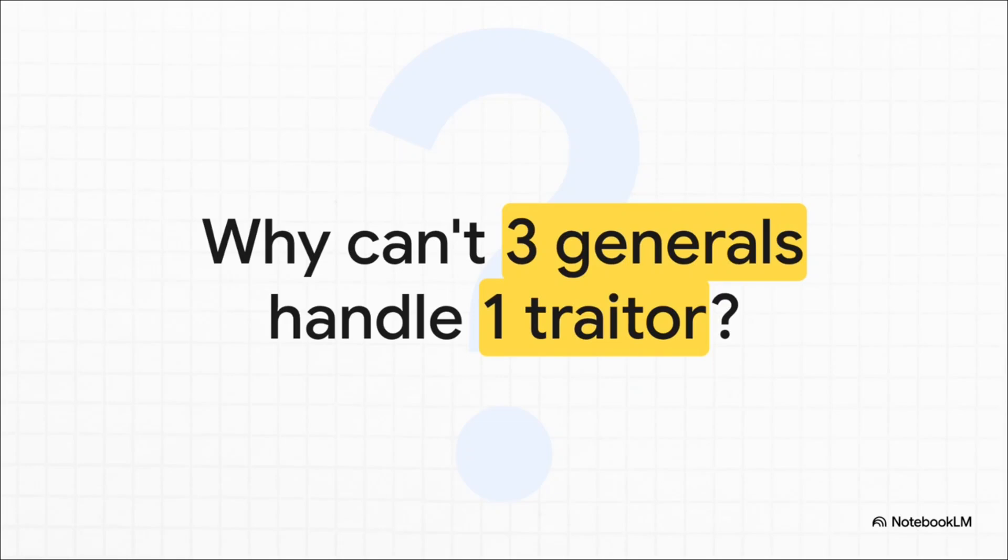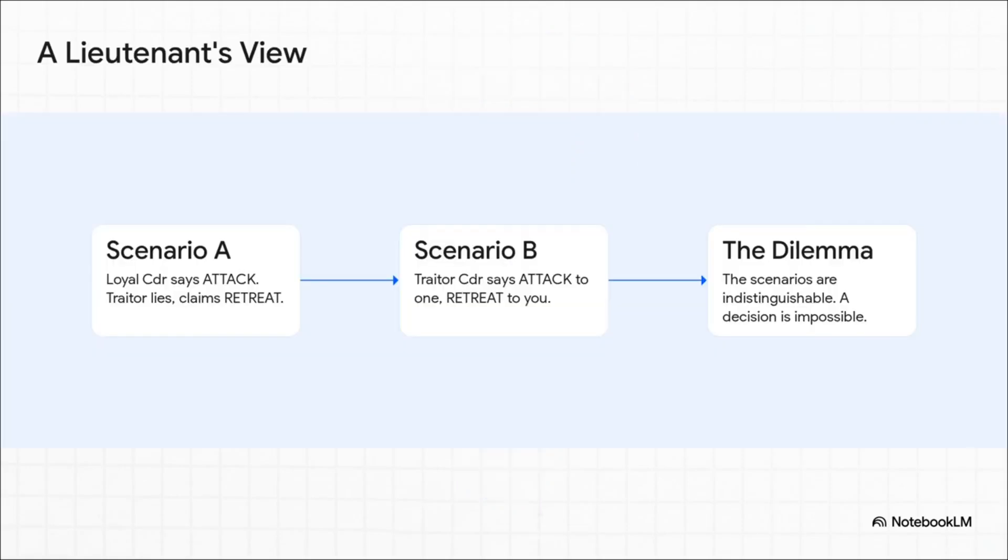But why that specific number? Why can't just three generals manage to overcome one single traitor? Let's walk through the simplest impossible scenario. Put yourself in the shoes of a loyal general. In one scenario, your commander is loyal and orders attack, but your colleague, the traitor, lies and says the order was retreat. In another scenario, your commander is the traitor. He tells your loyal buddy to attack but tells you to retreat. Here's the killer part: from where you stand, both situations look exactly the same. You've received one attack message and one retreat message. There's absolutely no way for you to know who's lying. Any decision you make is a total gamble.